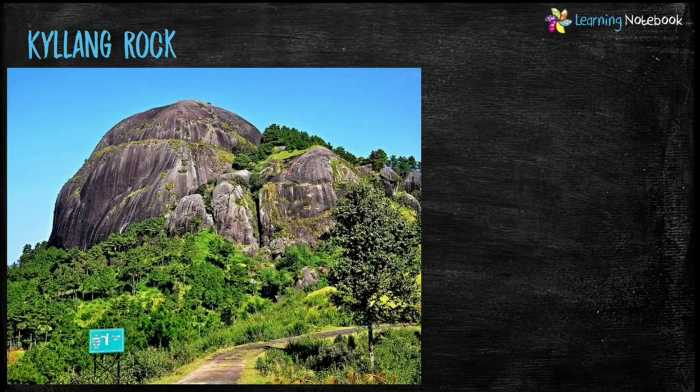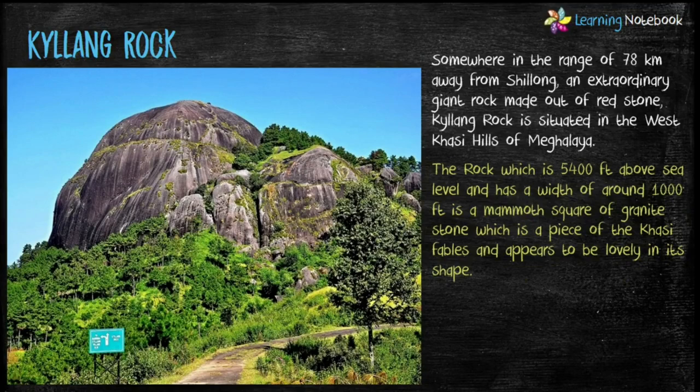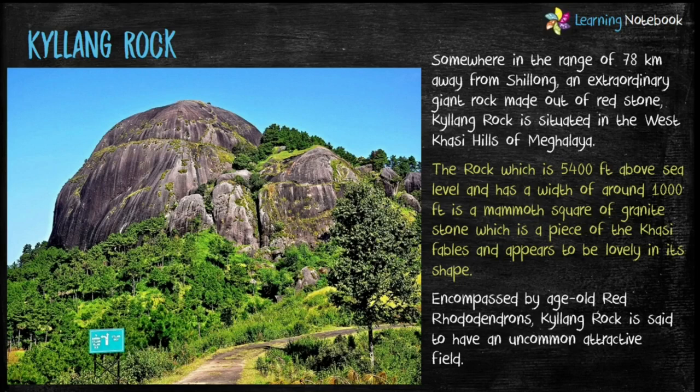Next is Krang Rock, situated somewhere around 78 km away from Shillong. An extraordinary giant rock is made out of red stone. This Krang Rock is situated in the West Khasi Hills of Meghalaya.